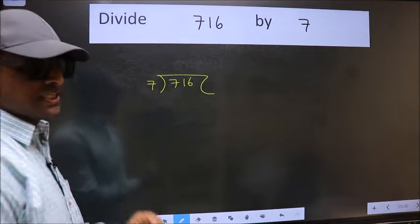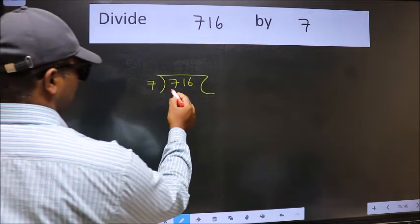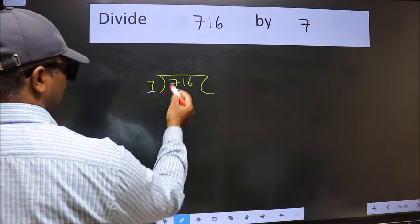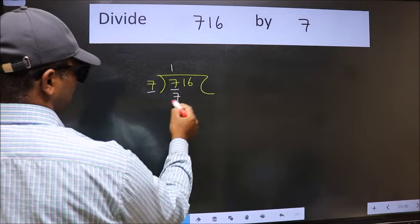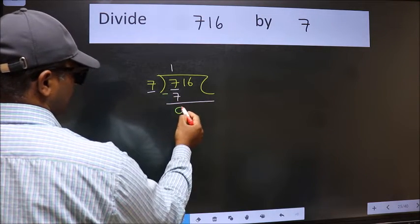716 here and 7 here. This is your step 1. Next, here we have 7 and here 7. When do we get 7 in 7 table? 7 once 7. Now we should subtract. We get 0.